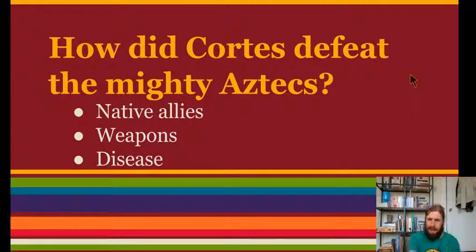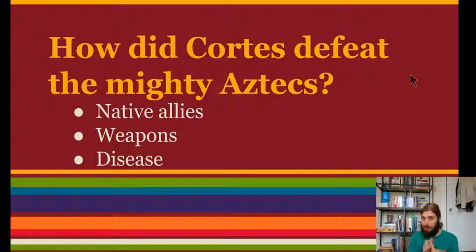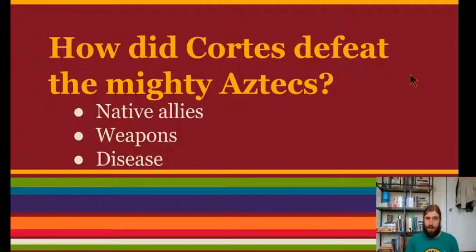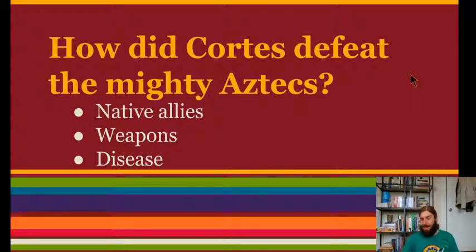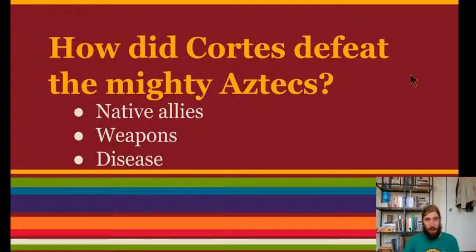How did Cortes defeat the mighty Aztecs with their great city and warriors? He had those Native American allies, which was very important. He also had better weapons — metal swords and guns — while the Aztecs were still using spears and bows and arrows. Another important factor was disease. The Aztecs were not accustomed to European diseases, so instead of getting a little sick and recovering, they would oftentimes die. Most of the Aztecs actually died from diseases brought over by the Europeans, not from the war itself.